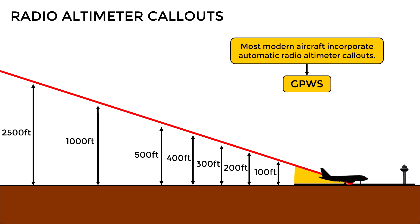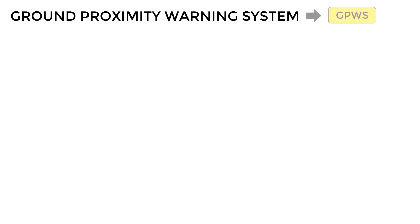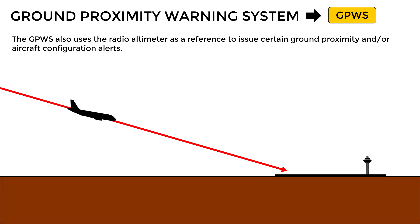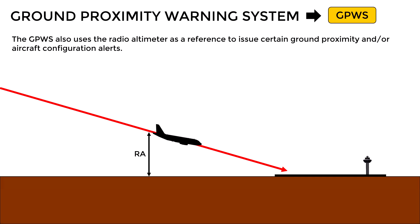Apart from those call-outs, there might be others such as 'Approaching minimums' and 'Minimums,' which are directly related to the decision height selected by the pilot. The GPWS also uses the radio altimeter as a reference to issue certain ground proximity and aircraft configuration warnings. For example, if an aircraft is approaching to land but the crew forgets to extend the flaps and the landing gear, the GPWS will issue a warning when the aircraft descends below a certain height above ground level.